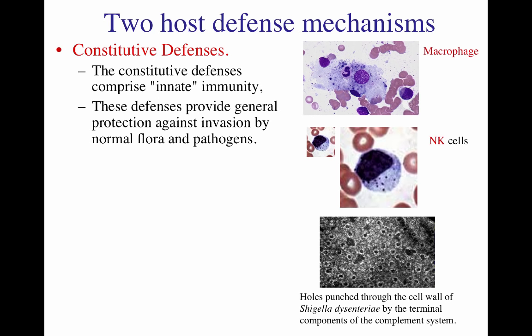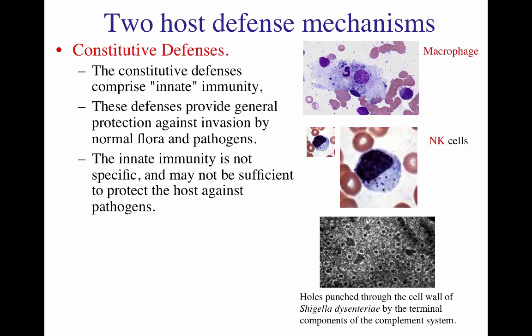The innate immunity lacks specificity — it attacks everybody equally — and it operates through multiple components. The cellular component includes phagocytes, particularly macrophages. The macrophage is a very large cell whose whole purpose is to phagocytose particles. Shown here alongside red blood cells for size comparison, you can also see a lymphocyte next to it.